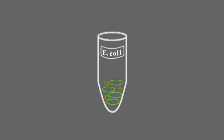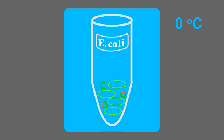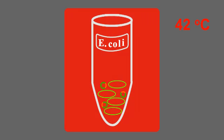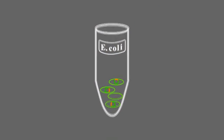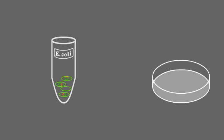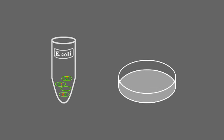During the transformation, the cell-DNA mixture is kept on ice and then exposed to 42 degrees Celsius. A sudden change in temperature drives the DNA inside some of the E. coli cells. Then the cells are plated on a plate with growth medium supplemented with a selective antibiotic.